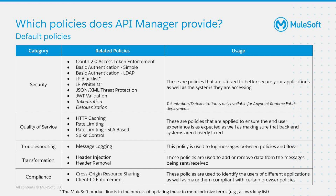Another category is Transformation. In this category, we have the header injection and header removal policy, which lets you add or delete HTTP headers to the request or response of a message. And last but not least, the compliance category. Those policies are useful to identify who is actually using and accessing your different applications, as well as making your users compliant with certain browser policies. For this category, we have the cross-origin resource sharing policy available, as well as the client ID enforcement policy.